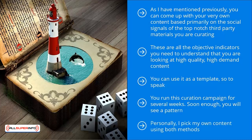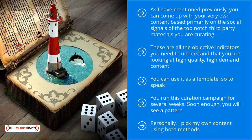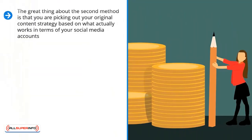Personally, I pick my own content using both methods. If I'm in a hurry to get people to sign up to my mailing list, I do the first method. But if I'm unsure about the niche or I'm still trying to feel my way around in terms of understanding my audience, I would stick to the second method. There's really no one right answer — it really all depends on your situation. The great thing about the second method is that you are picking out your original content strategy based on what actually works in terms of your social media accounts.